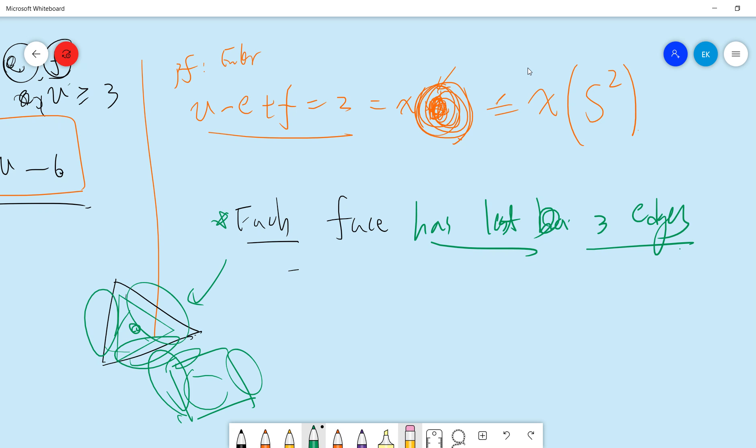Okay, so, and also, but in this formula, this face is counted twice, right, you count the inner and the outer, right, so that means what? That means your three times, okay, three times, so your face, right, is less than 2E.